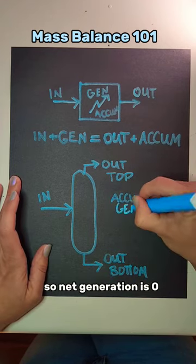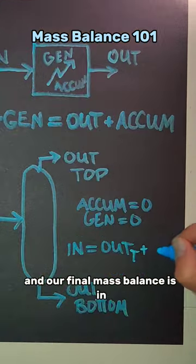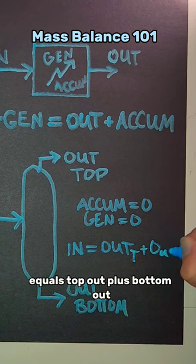There's no reaction, so net generation is zero, accumulation is zero, and our final mass balance is in equals top out plus bottom out.